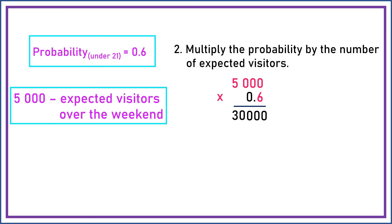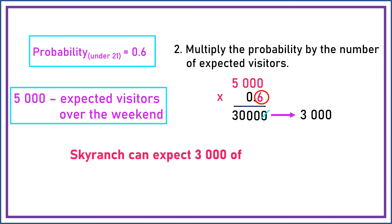So we bring down 3 zeros. Next, we're going to count the number of decimal numbers in the factors. We have only one decimal number in the factors, so we cancel one zero in the product. The answer is equal to 3000.